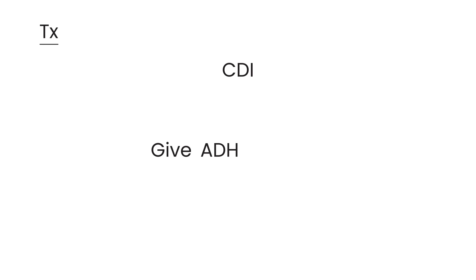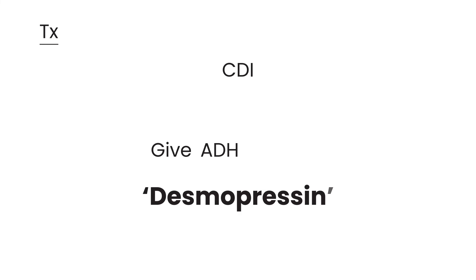How do you treat CDI? The treatment is straightforward — you give the patient ADH. Specifically, the drug is a synthetic analog of ADH called desmopressin, which is made in the laboratory. It is given in various forms: intranasal solution, IV, oral, or subcutaneous.